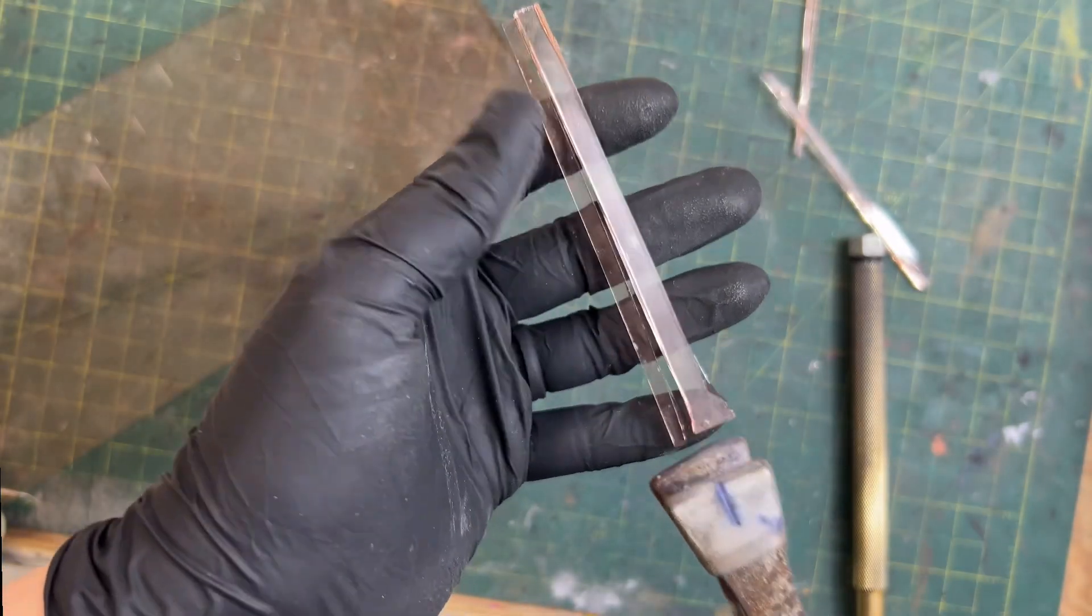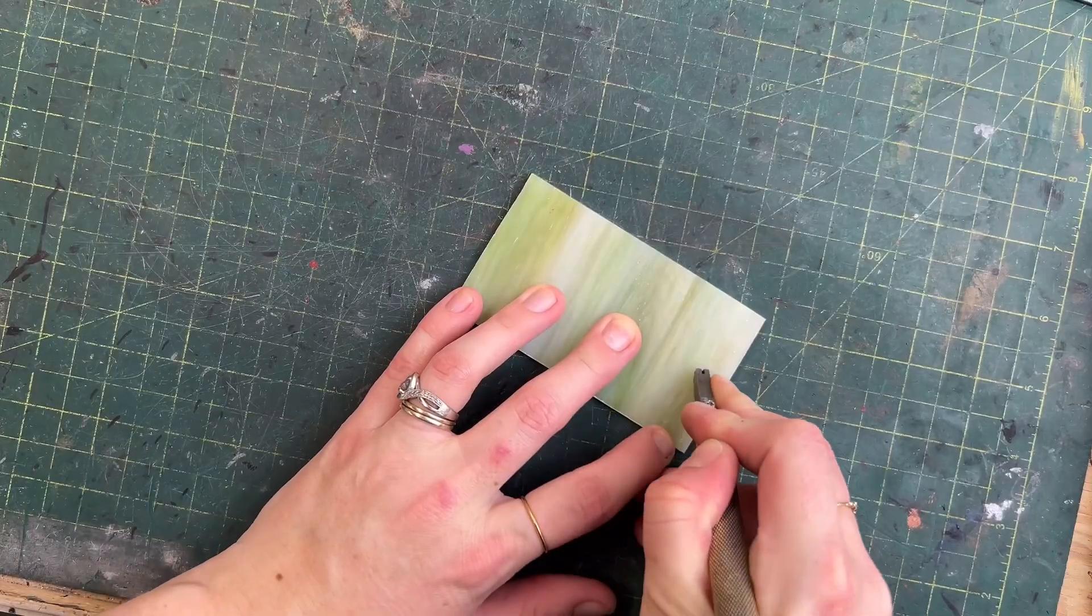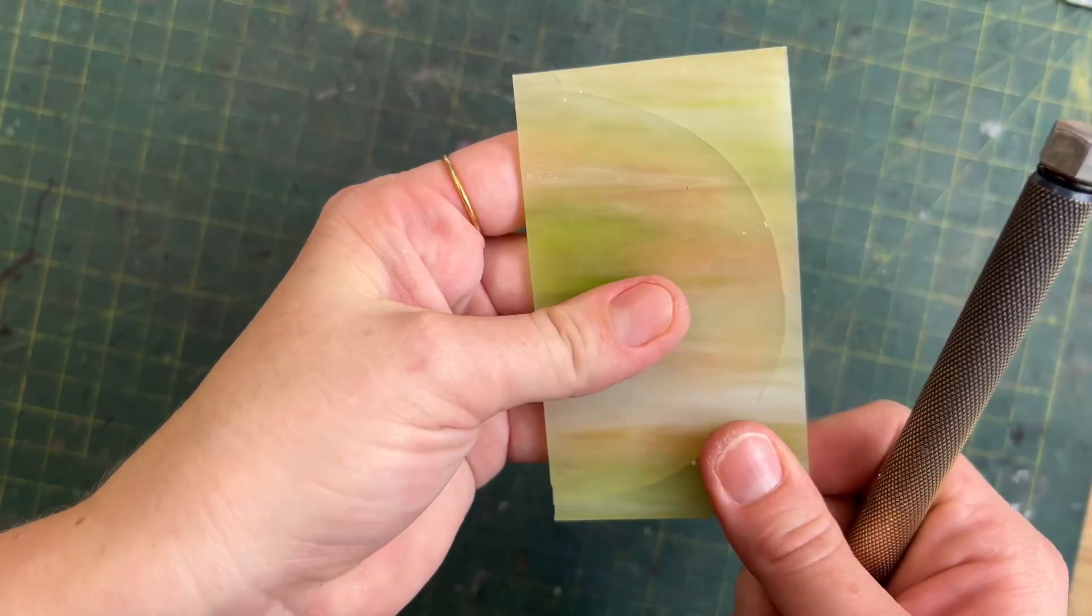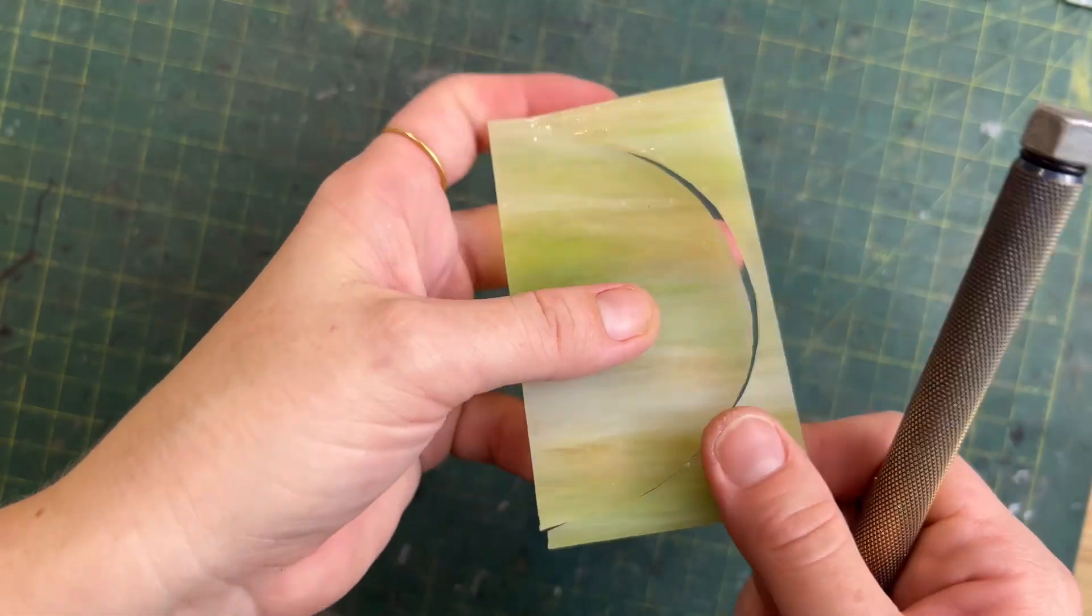It's easy to accidentally snap a piece when you're scoring it, and even if you cut it perfectly, stress points in the glass can cause breaks later. I have a sneaking suspicion this won't be much of an issue for the Wazer, so let's test it out.